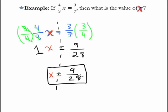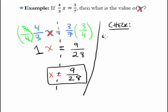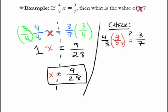Is there any way we could check this? Certainly. This equation is only true when x equals 9 over 28. Let's check: is it true that 4 thirds times 9 over 28 equals 3 over 7? We can cancel a factor of 3 — this 3 is gone, and 9 turns into a 3. Then 4 over 28 is the same as 1 over 7. On top I have 1 times 3, which is 3. On the bottom I have 1 times 7, which is 7. Yep, it checks out.